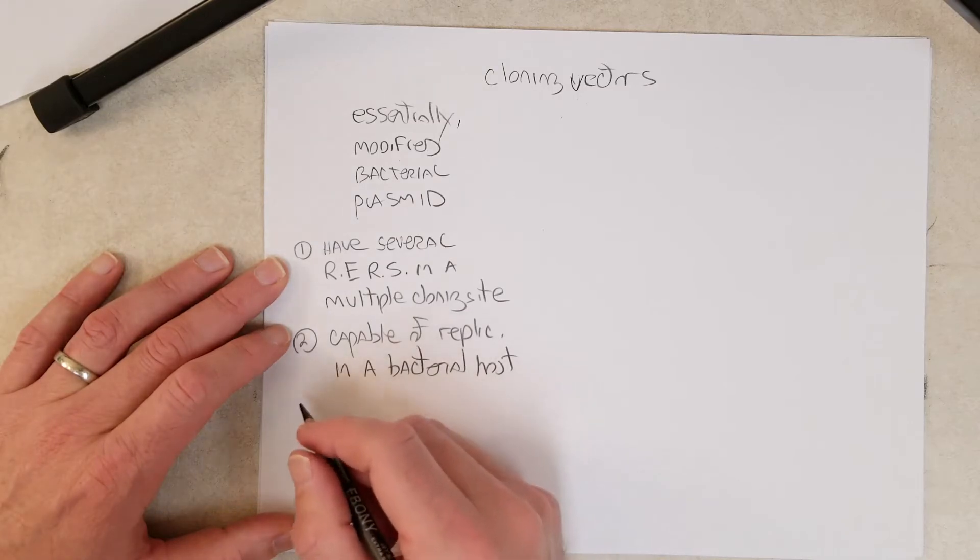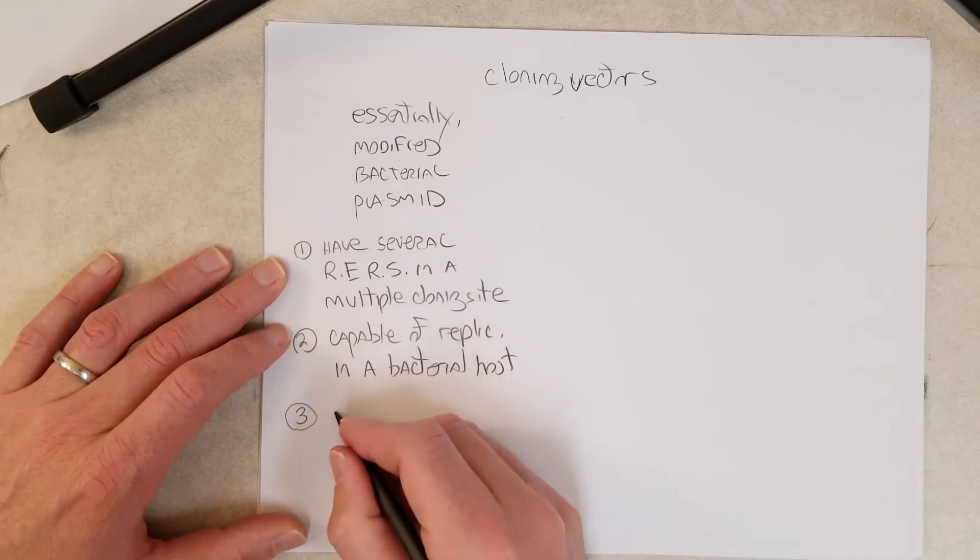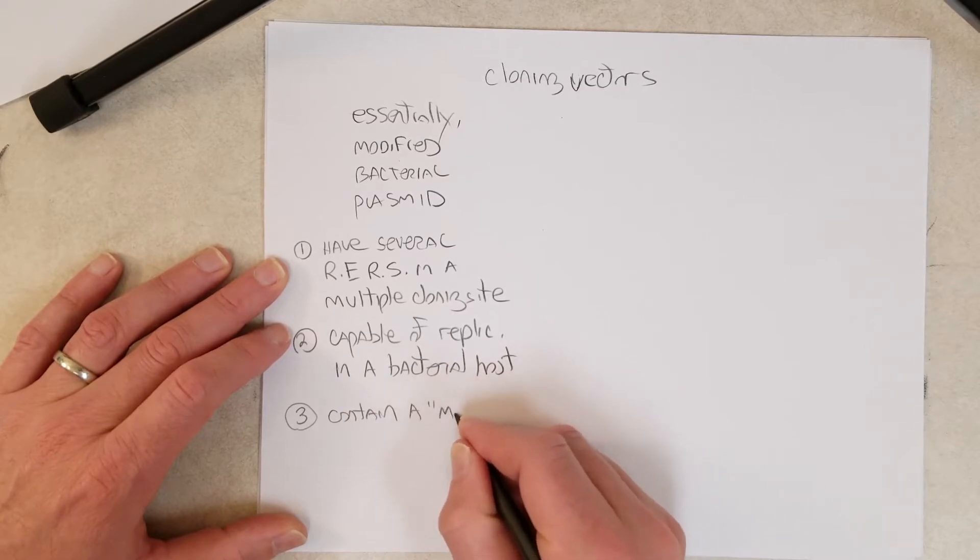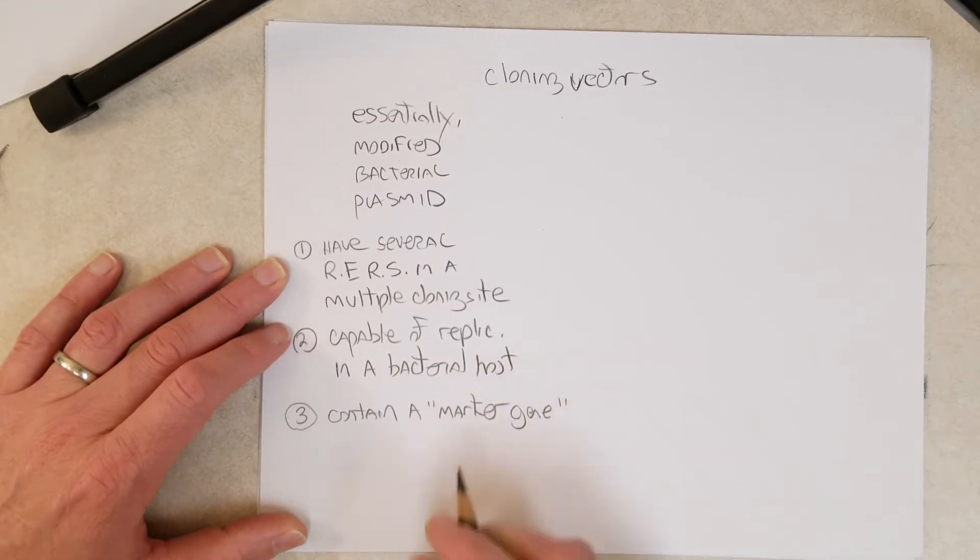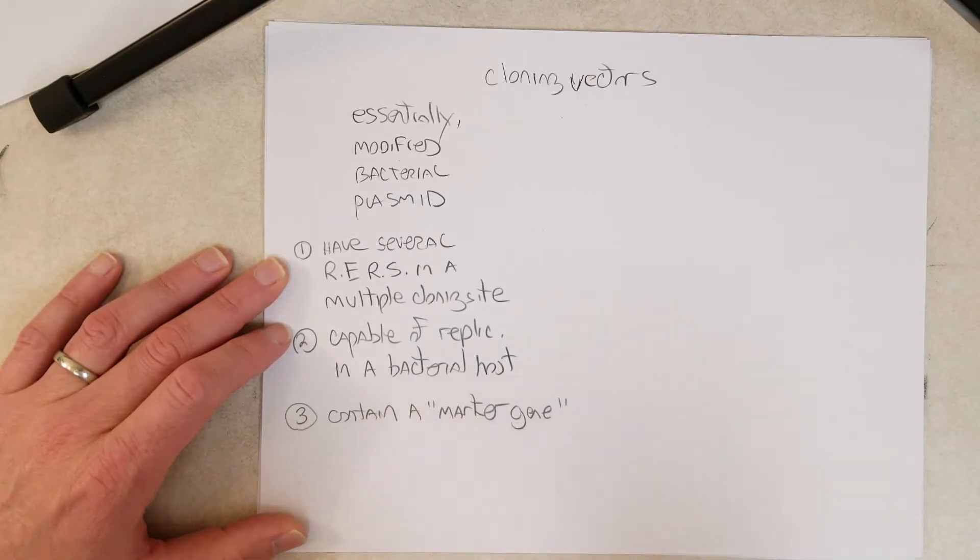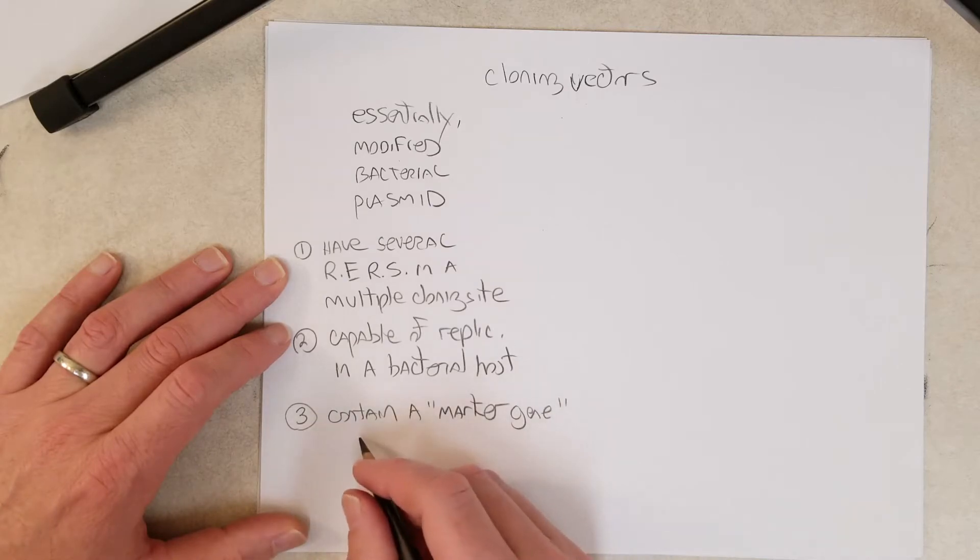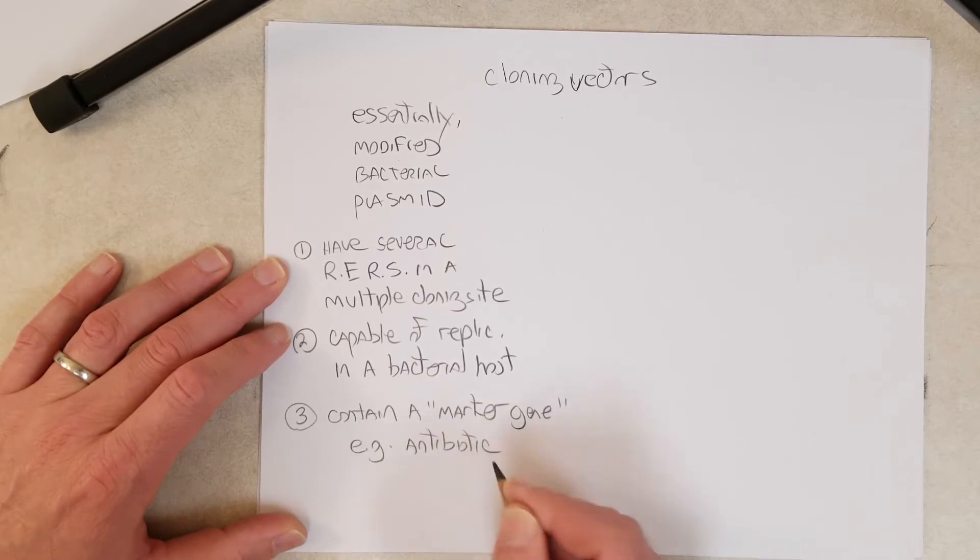I think there are some cloning vectors that work in yeast, which is a fungus. And they must contain a marker gene, and this marker gene allows us to know if the cloning vector or plasmid is inside the bacterium. One example of a marker gene is an antibiotic resistance gene.